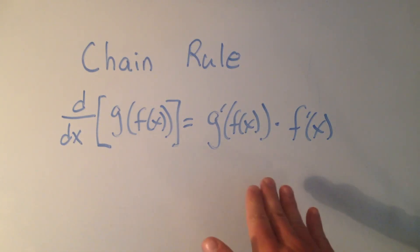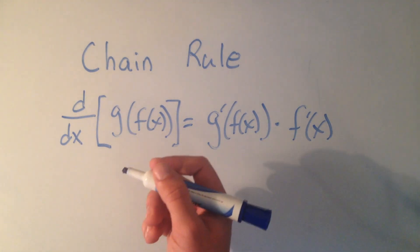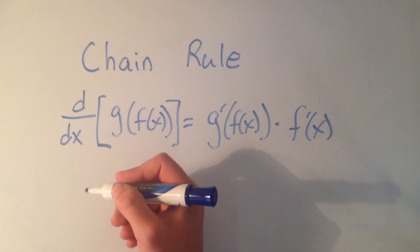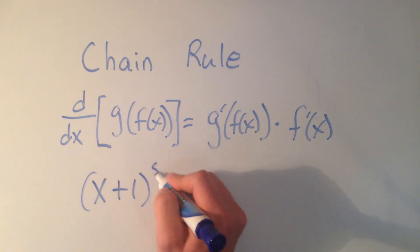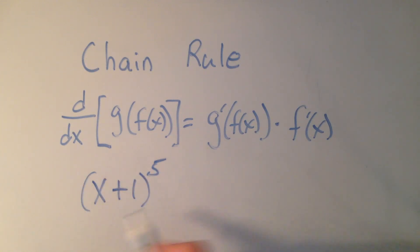Again, when you see it like this, it probably looks confusing, but with an example, that will probably help a lot. So let's say I had (x+1)^5, and I want to take the derivative of this.